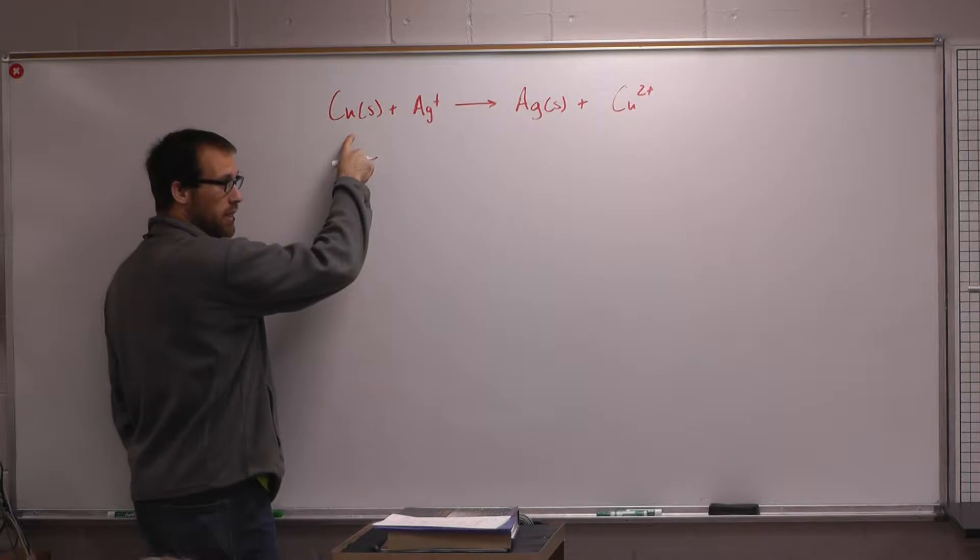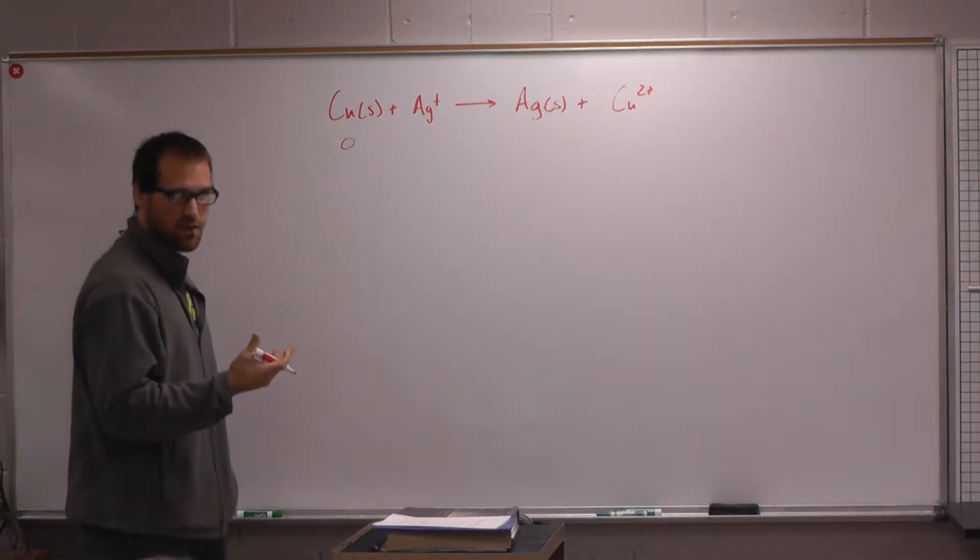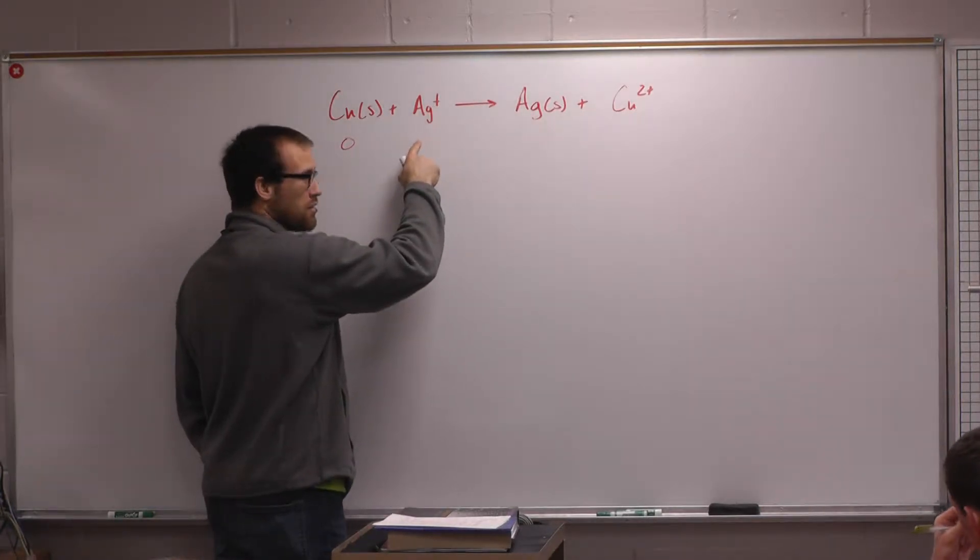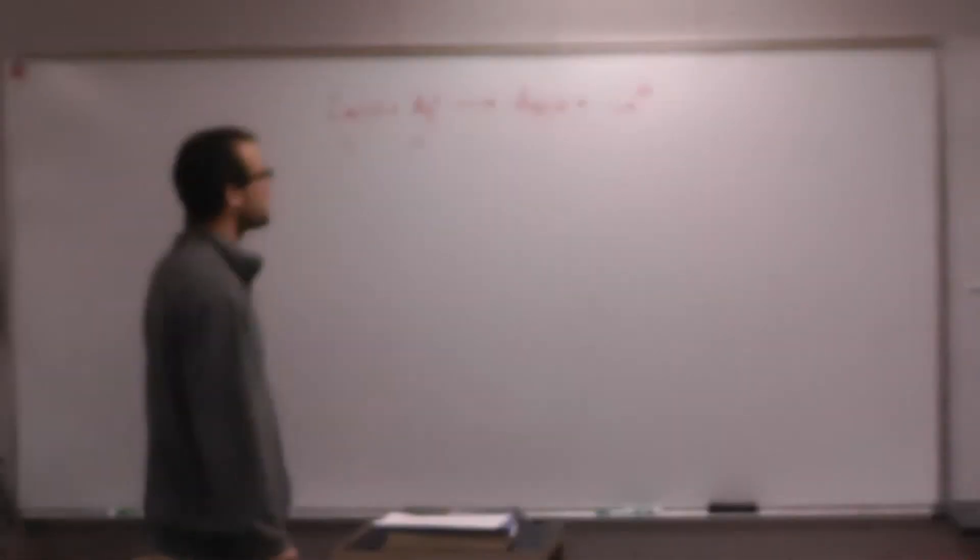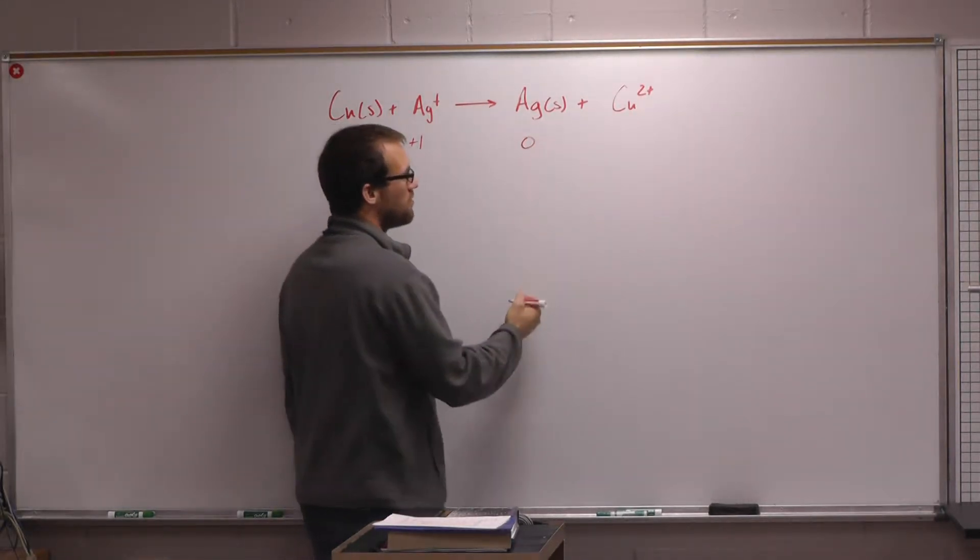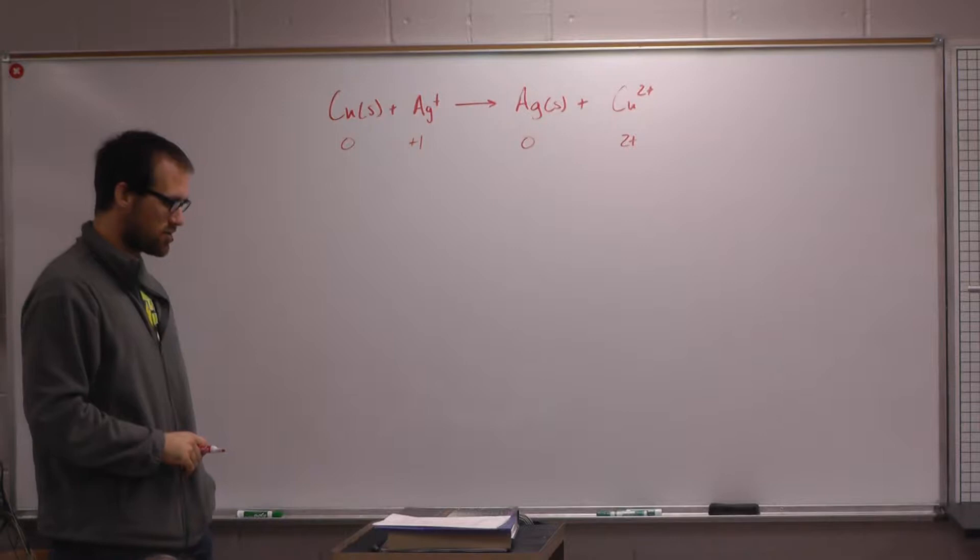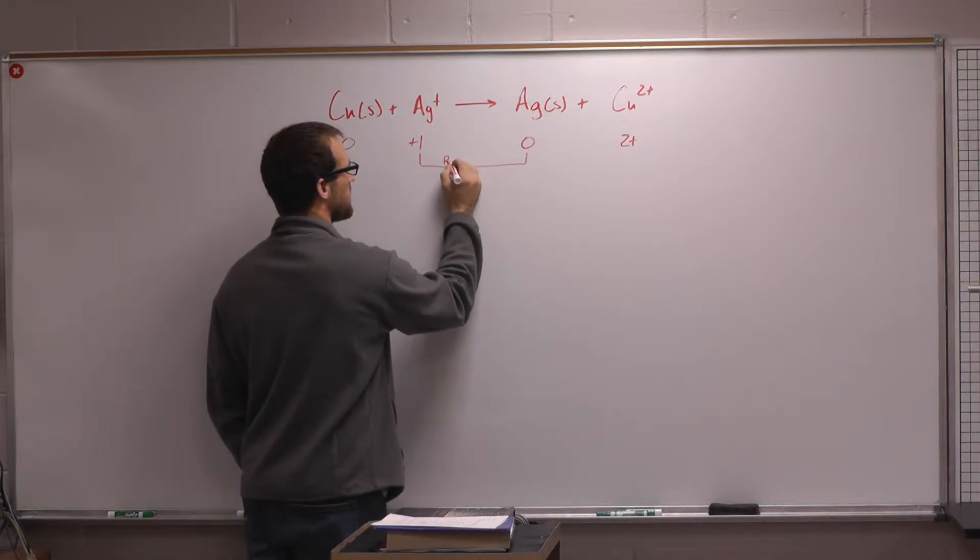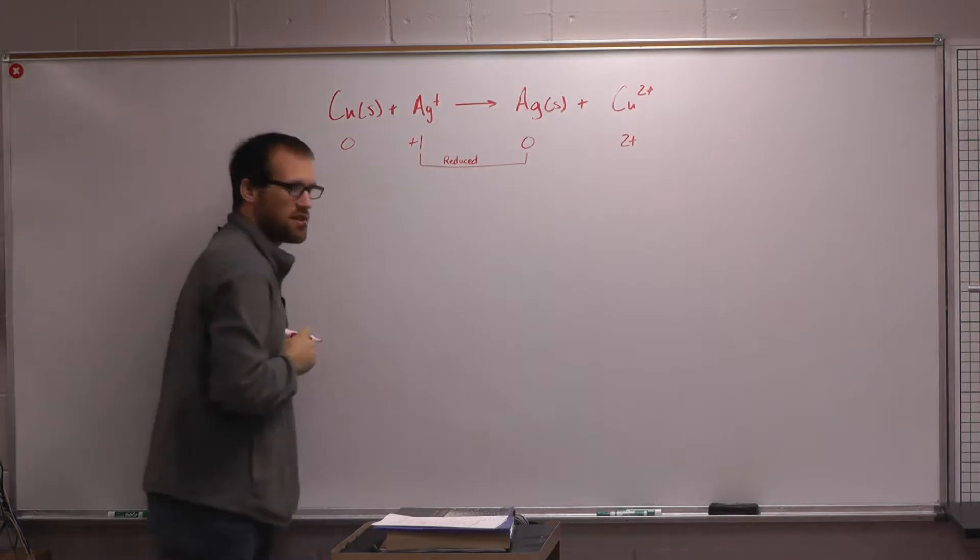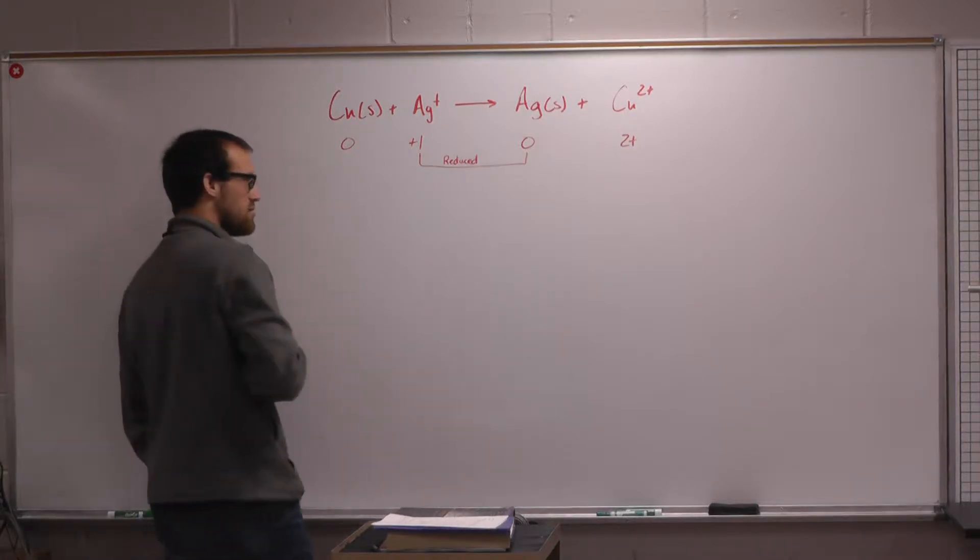And then I'll talk about how we go about balancing this. Because if you look at this, from an atom standpoint, it's all balanced, right? I got silver on one side and silver on the other, copper on one side and copper on the other. From an atom standpoint it is balanced, but what you will see is from an electron standpoint, it is not. So first thing, let's identify oxidation numbers. What is it for this guy? Zero. It's not an ion and it's a free atom.